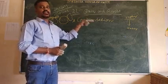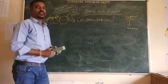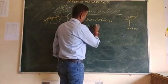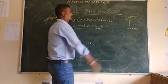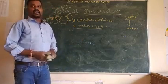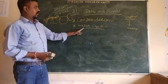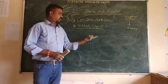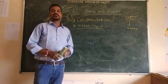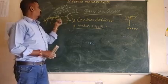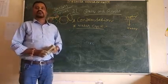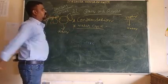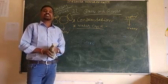First one is evaporation, next one is condensation, and next one is the water cycle. The water cycle is the process of water evaporating from the sea, oceans, seas, rivers, and lakes, forming clouds in the sky, and then coming down as rain again to the earth.